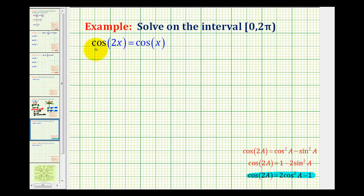Let's perform that substitution here on the left. We're going to have 2cos²(x) - 1 = cos(x).